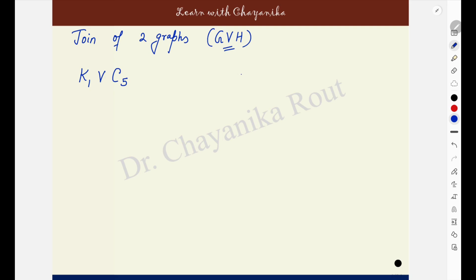What you will do is you will first draw both the graphs individually. This is my K1, and my graph C5 is the cycle having length 5. So you draw your C5.